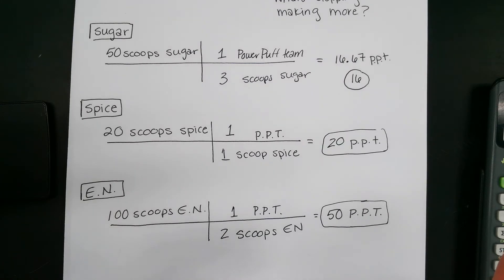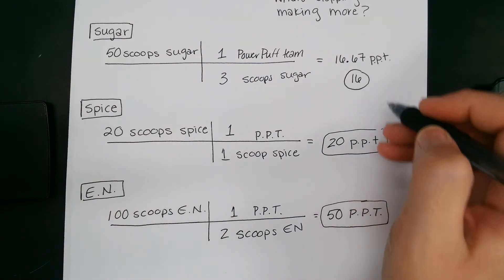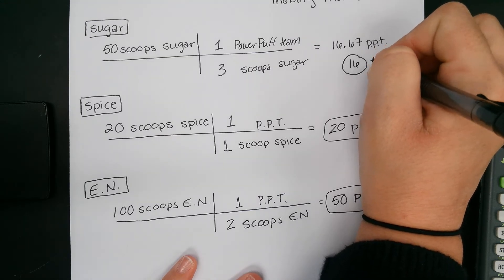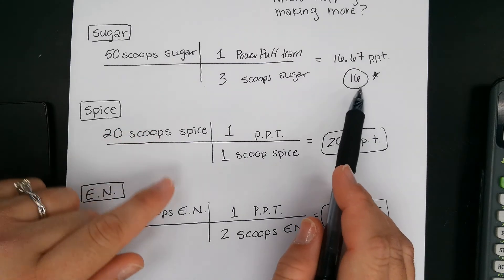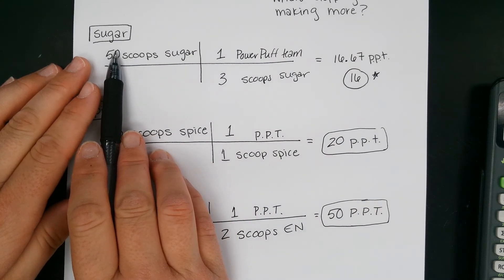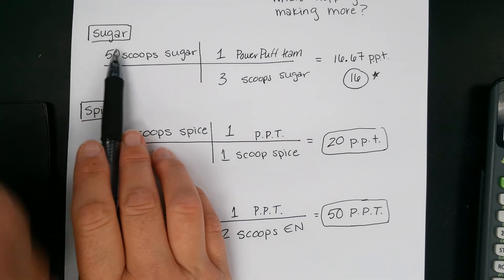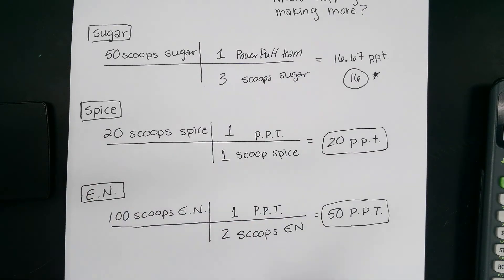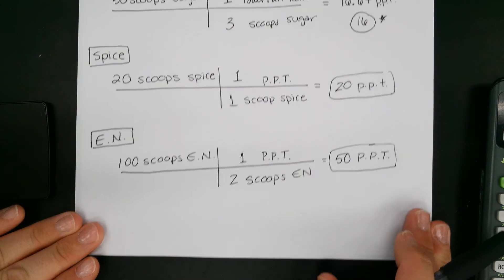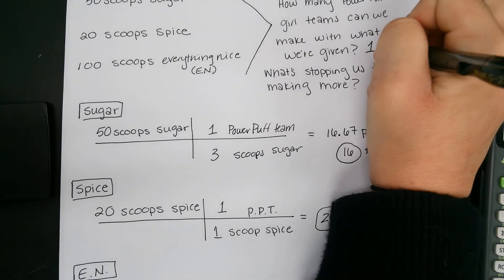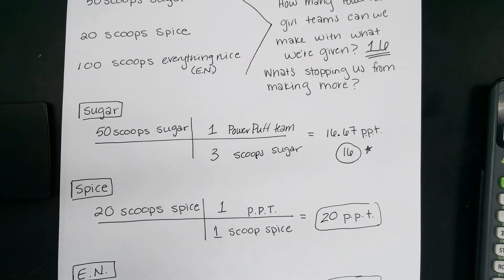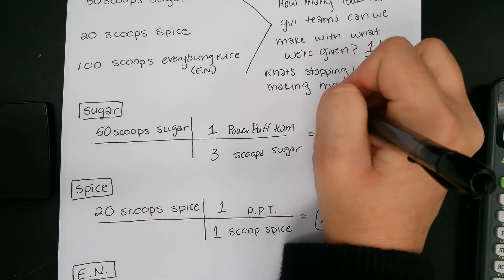Now we have three different numbers: we can make 16, 20, or 50 teams. The way to know how many you're actually going to make is whichever is the smallest number. Since the smallest is 16, that's the number we actually create — because at that point we run out of sugar and can't make any more Powerpuff teams. So the answer to how many teams we can make is 16, and what's stopping us is the sugar.